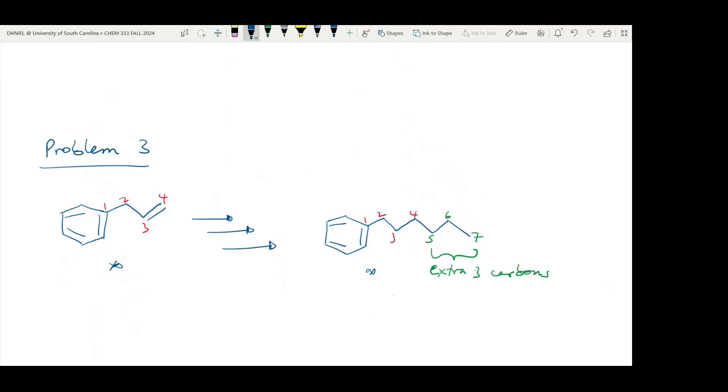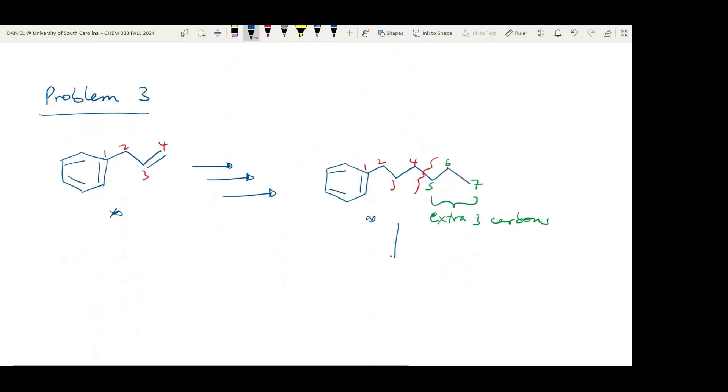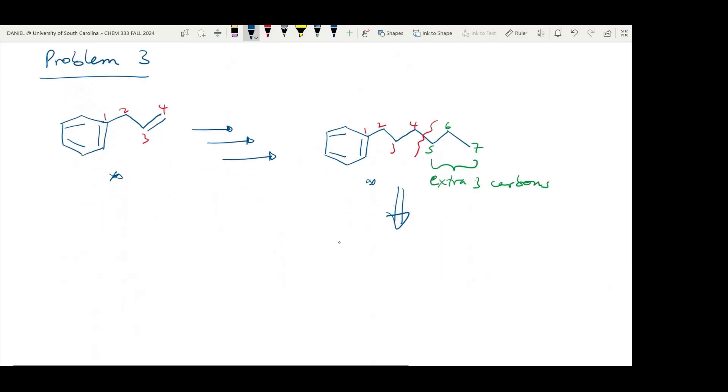A good question to ask will be: how can we disconnect the product into two or more simpler components such that one of the components will be similar or even the same as the starting material? So I disconnect this product at this point. We will have two components. This component will be this and this.